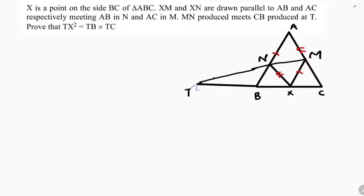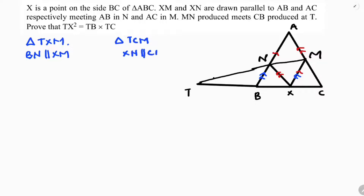Starting from T, I will take triangle TXM. In triangle TXM, BN is parallel to XM. I will also take triangle TCM, in which XN is parallel to CM.